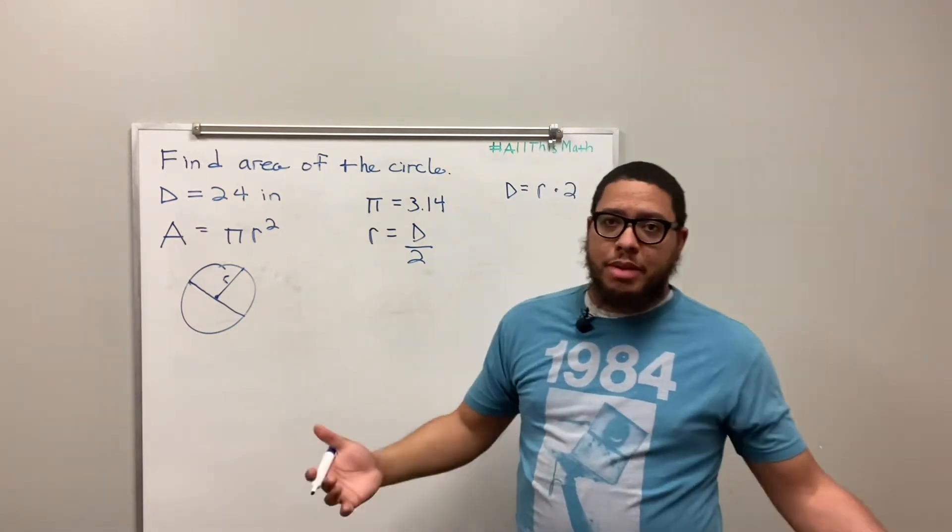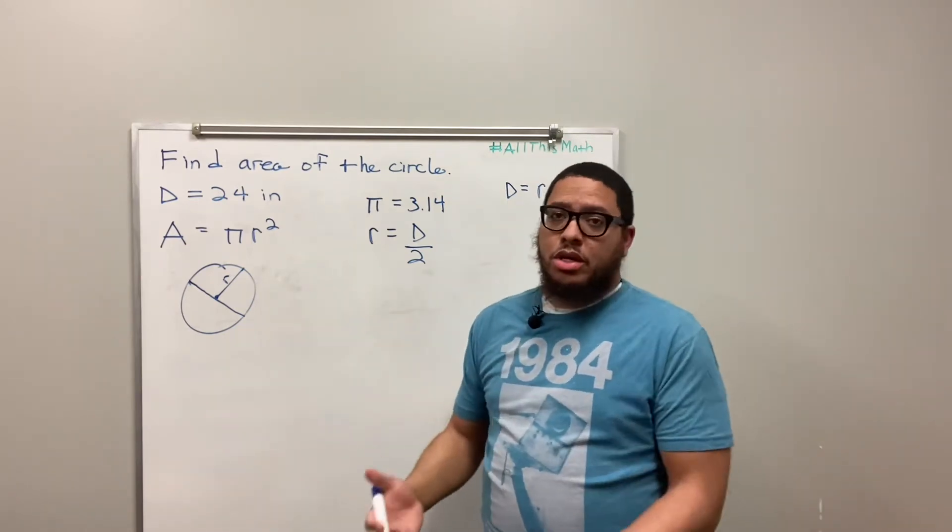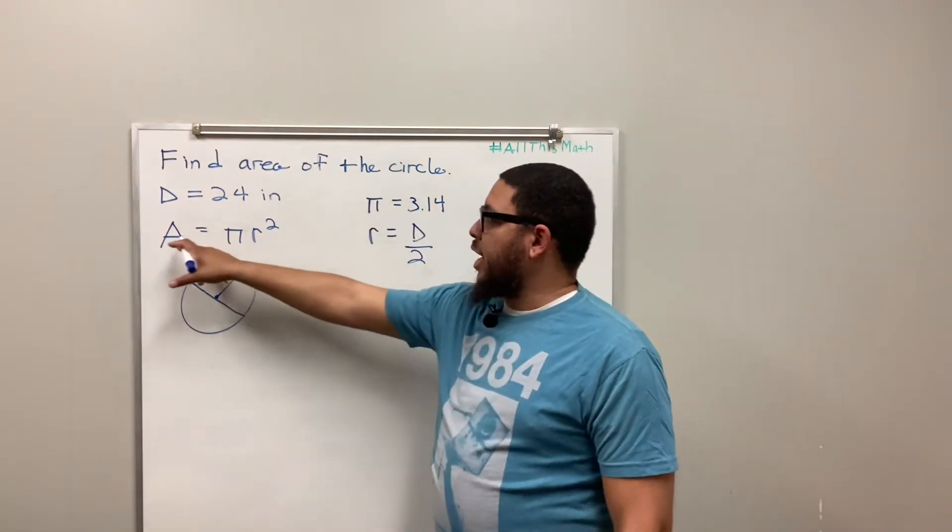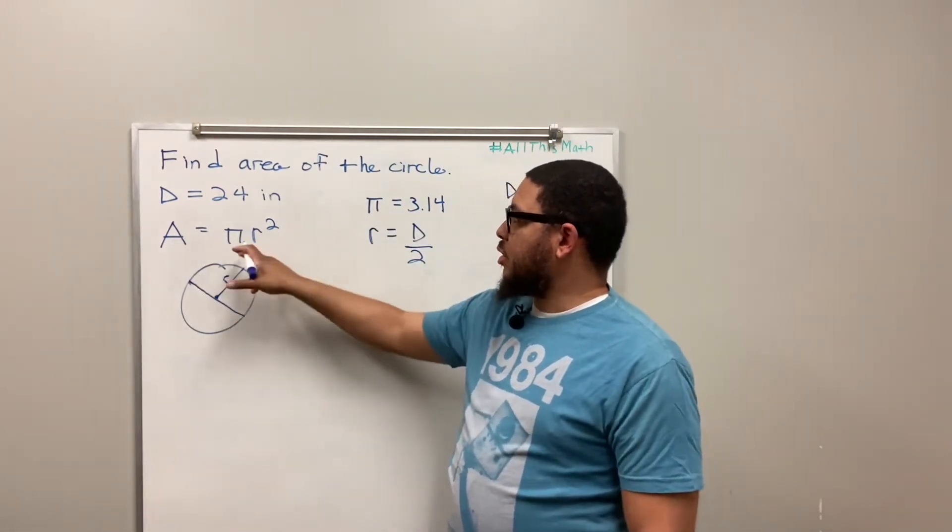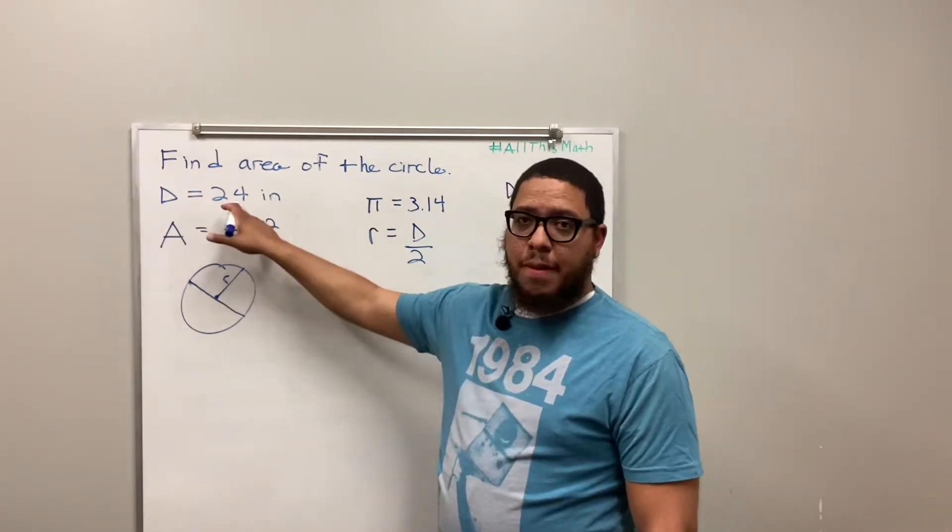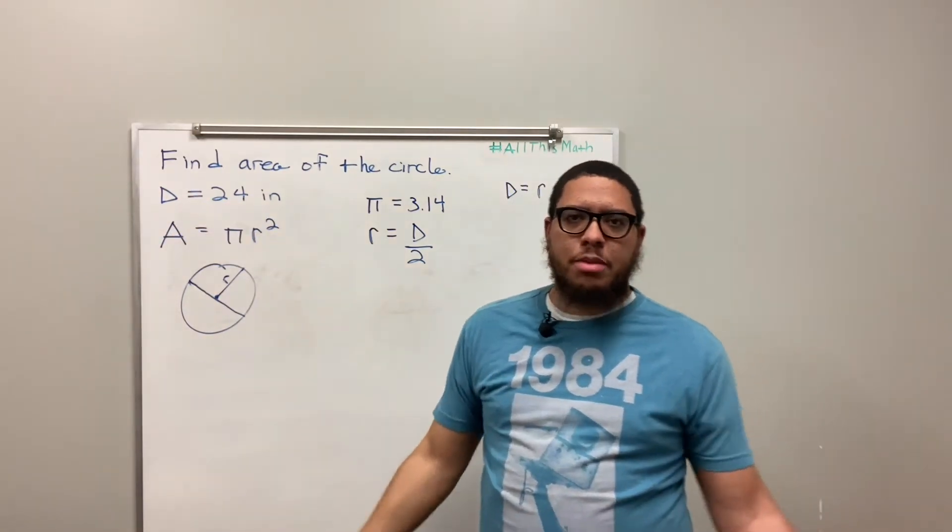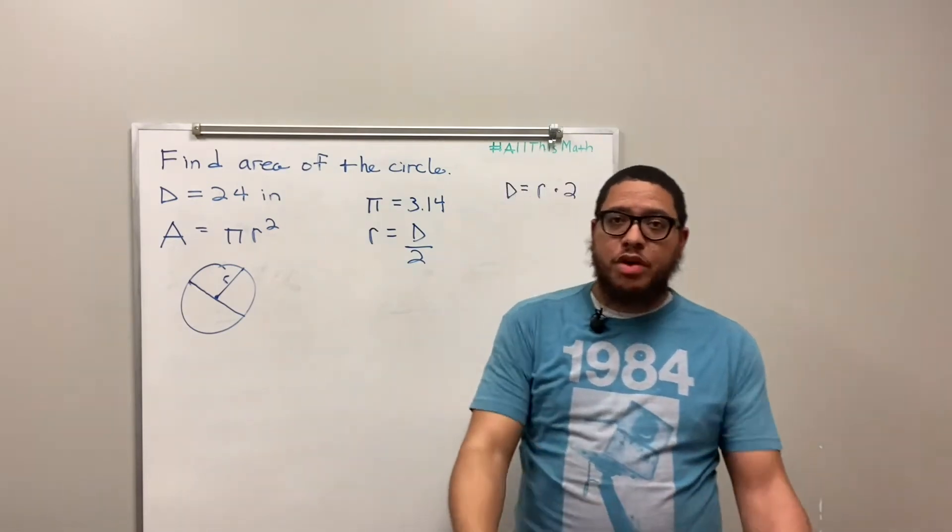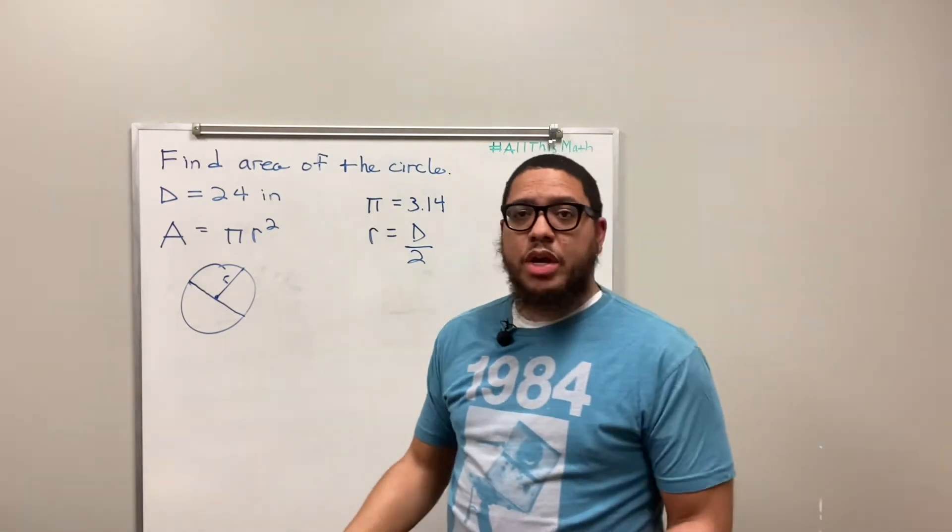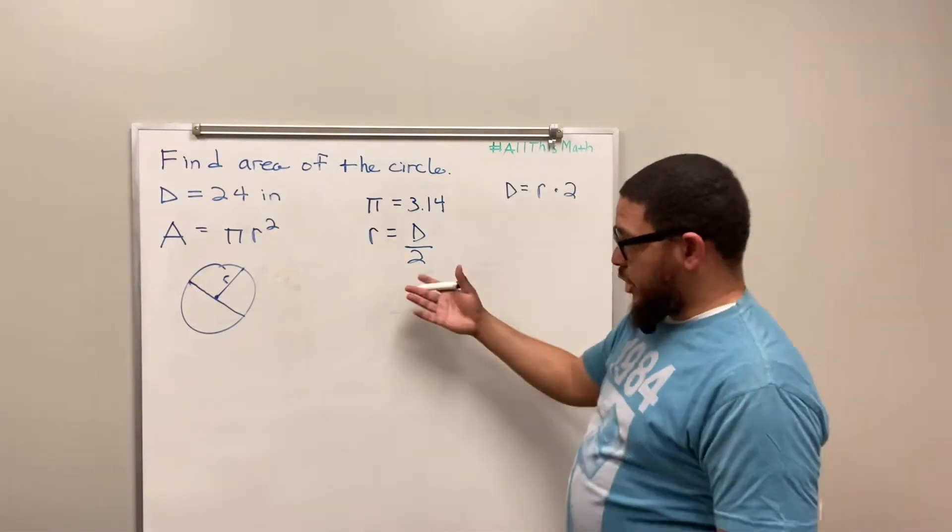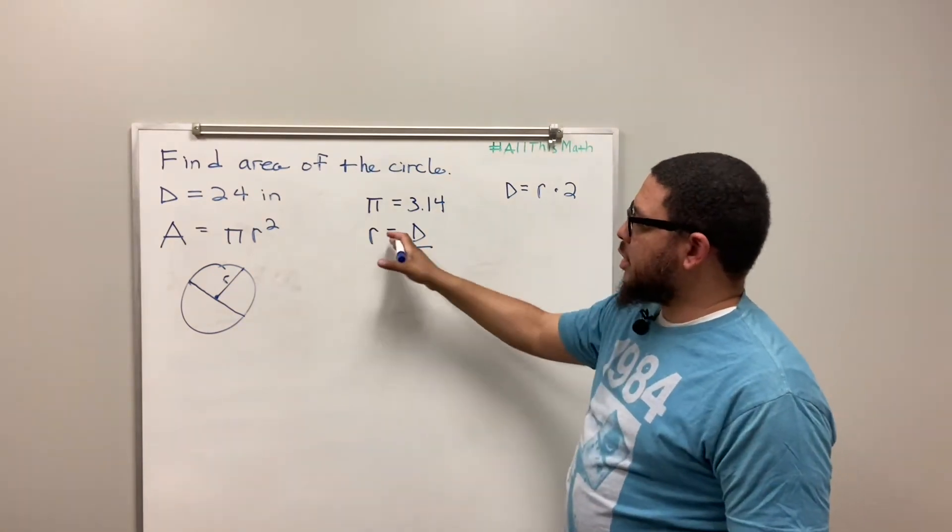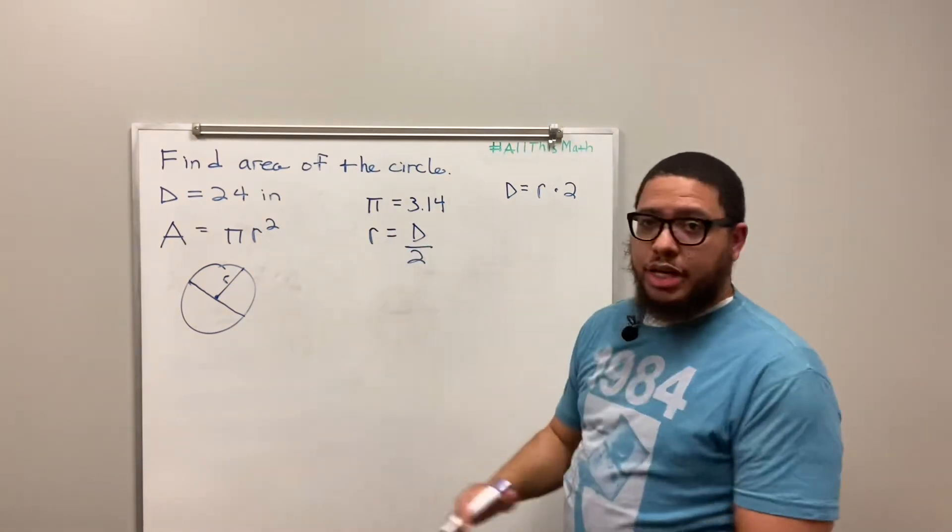Sometimes you might need to know the diameter. You might need to know it. For the area, you only need to know the radius. Now, in order to find the area of any circle, I need to know pi and I need to know the radius. We're given the diameter. So you might be thinking like, oh, but I need the radius though. What am I going to do? How am I going to do the problem? Well, lucky for us, we know how to figure out what the radius is when we're given the diameter.